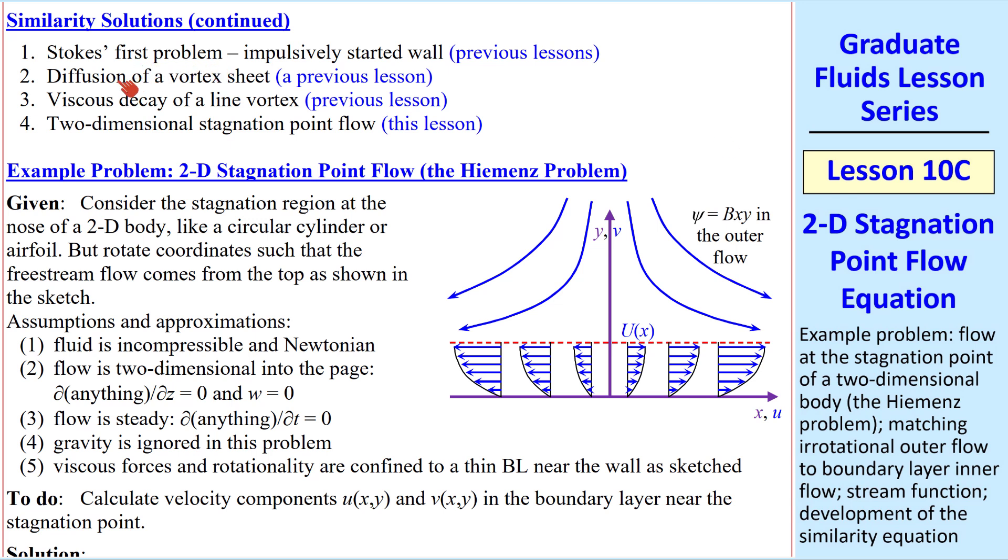We did Stokes' first problem, diffusion of a vortex sheet and viscous decay of a line vortex. The present 2D stagnation point flow problem is sometimes called the Hiemenz problem.